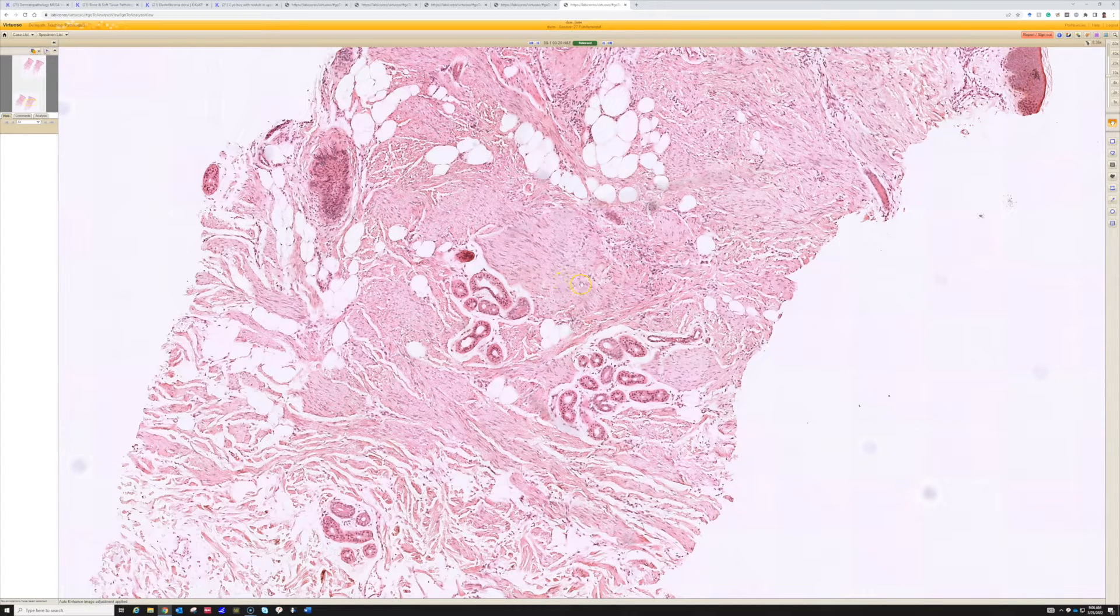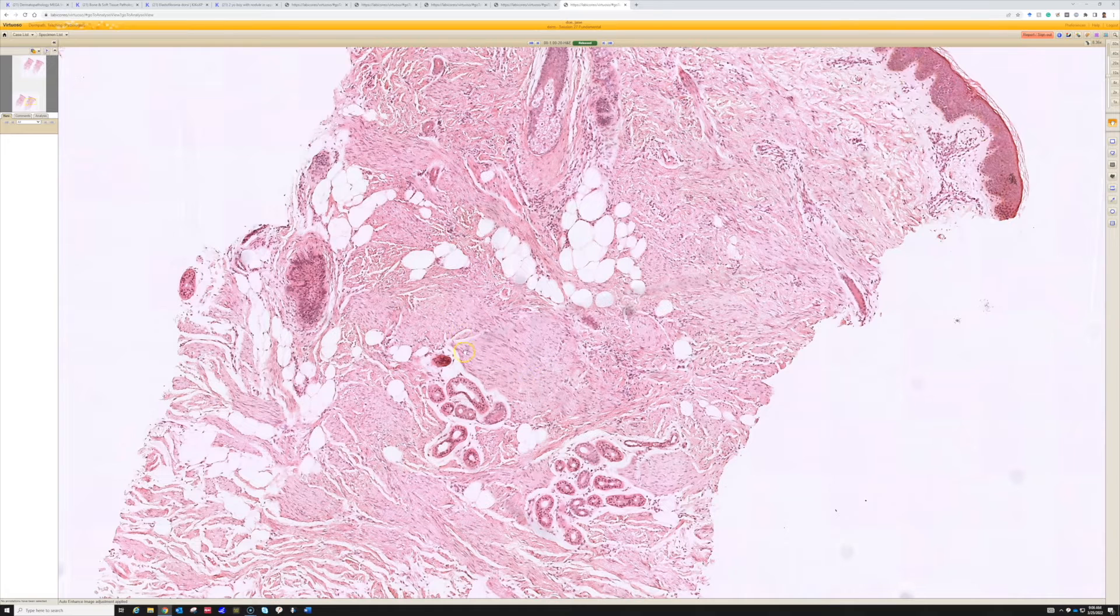And because of that, you could think about dermatofibrosarcoma protuberans, although I've seen a lot of DFSPs, and I've never seen a DFSP that has this pattern of fascicles of hypocellular cells. DFSP can get fascicles that intersect when it becomes higher grade and fibrosarcomatous, but it's going to be very cellular and blue and closely packed cells when it does that, very different from this.